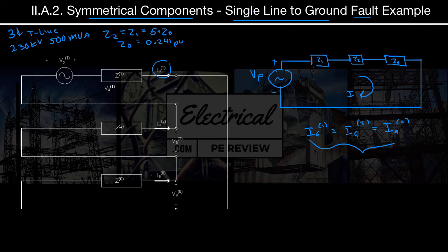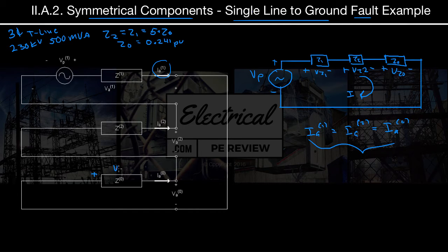The current flows left to right through the circuit, producing voltage drops: plus VZ1 minus, plus VZ2 minus, and plus VZ0 minus across each impedance respectively. Since the current always flows from left to right, the left side is always the positive side of each voltage drop.